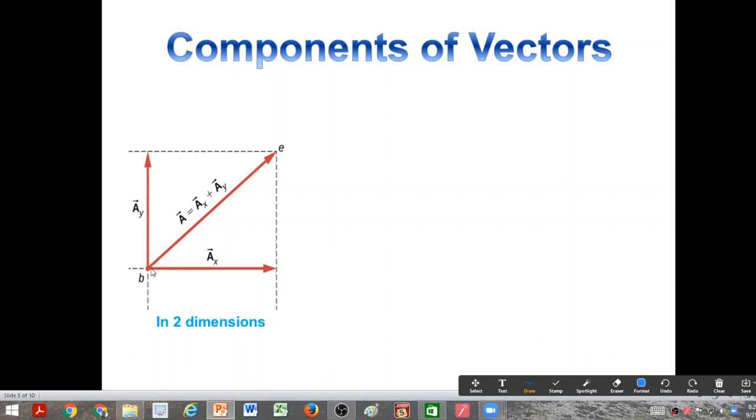Here it is from B till the point E - that is the vector A. And with respect to this coordinate system in two dimensions, this is the x-axis and this is the y-axis.